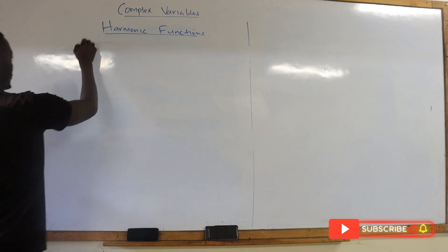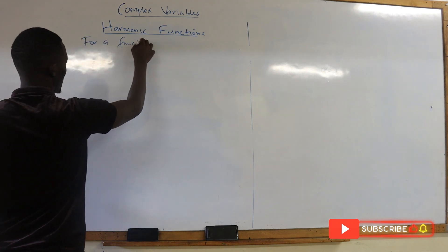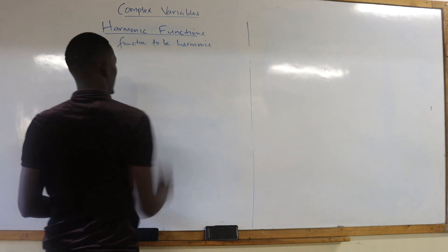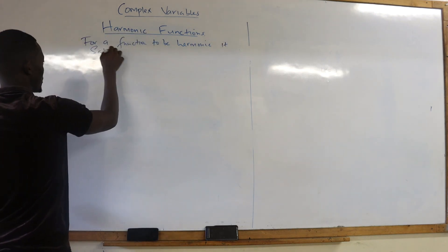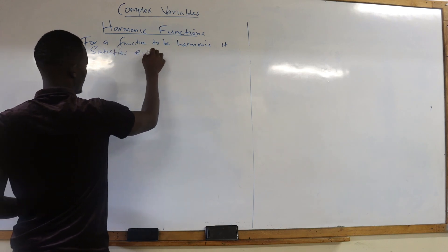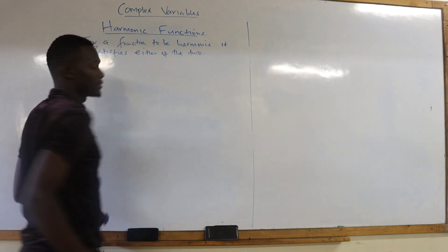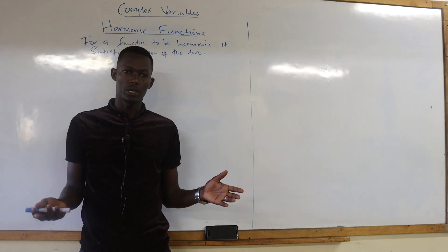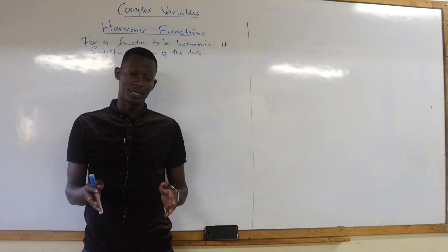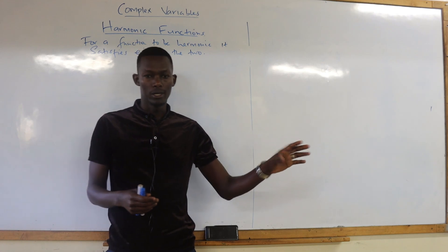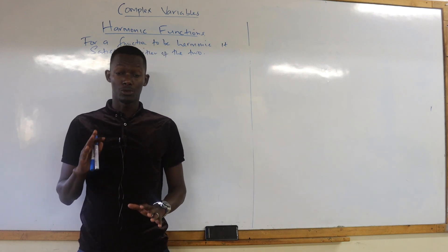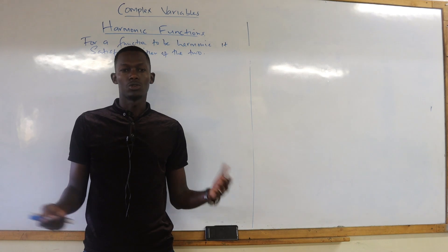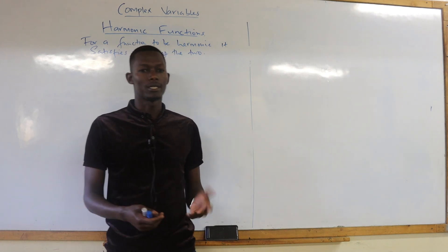For a function to be harmonic, it has to satisfy either of two conditions. We say 'either' because a complex function has two parts — the real part and the imaginary part. So you can be given a function in terms of u alone or in terms of v alone. Therefore, one of the two conditions can be met depending on the function that you've been given.